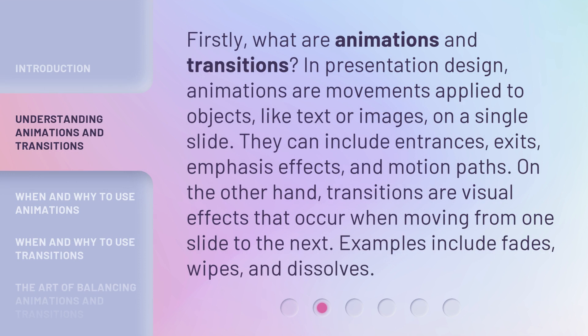Firstly, what are animations and transitions? In presentation design, animations are movements applied to objects, like text or images, on a single slide. They can include entrances, exits, emphasis effects, and motion paths. On the other hand, transitions are visual effects that occur when moving from one slide to the next. Examples include fades, wipes, and dissolves.